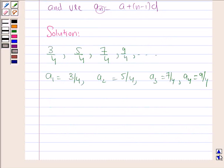So we will find the common difference first. Here a_2 minus a_1 is 5/4 minus 3/4, which is 2/4.